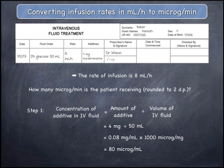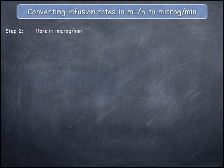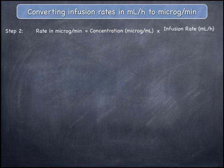This means that every 1mL of IV fluid contains 80 micrograms of noradrenaline. In the second and final step, the rate of infusion in micrograms per minute can be found by multiplying the concentration of the additive in the IV fluid in micrograms per mL by the infusion rate in mL/h and then dividing by 60 minutes per hour.